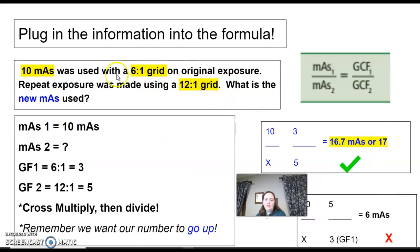Alright, so plug your information into the formula. So here's a picture of the formula here: mAs1 over mAs2, grid factor 1 over grid factor 2. So here's your question again: 10 mAs with a 6:1, we're moving up to a 12:1. It's asking me to find the new mAs. So mAs1 is 10. mAs2, we don't know. We've got to figure that out.